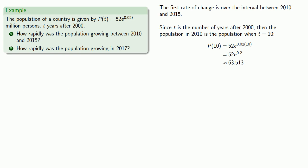Because this is an average rate of change, we also need the population in 2015 when t equals 15.